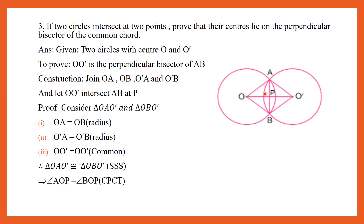For the construction, join OA, OB, O'A, and O'B. Also, let OO' intersect the common chord at point P. Consider triangles OAO' and OBO'. We have OA equal to OB, the radius of the first circle; O'A equal to O'B, the radius of the second circle; and OO' equal to OO', common side. Therefore, triangle OAO' is congruent to triangle OBO' using SSS congruence. Therefore, angle AOP equals angle BOP using CPCT.